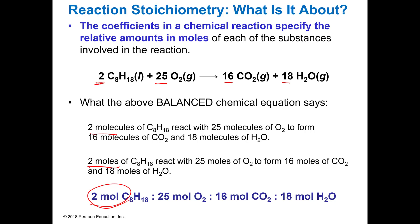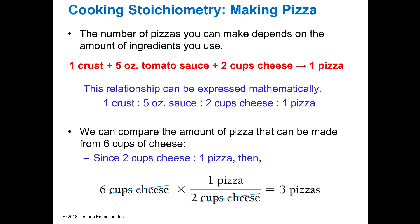So if my balanced chemical equation has coefficients 2, 25, 16, and 18, then they are reacting in a 2 to 25 to 16 to 18 ratio. For every 2 moles of C8H18 I'm going to produce 18 moles of water and 16 moles of CO2. So it tells me in an ideal world what that ratio and proportion is going to be.